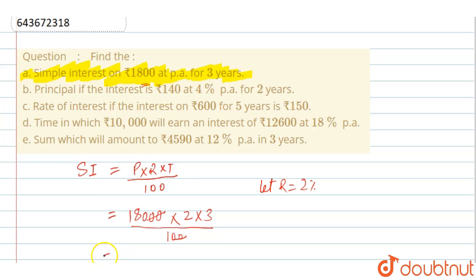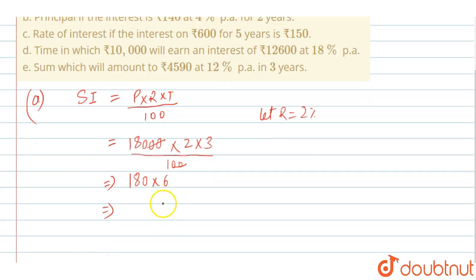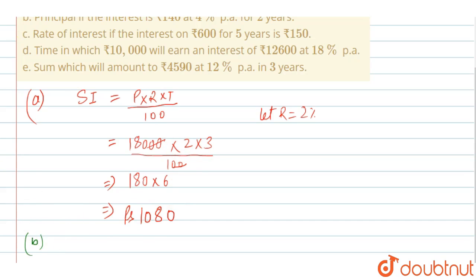So our final answer for sub-part A will be 180 into 3 equals 540, giving us ₹1080. So ₹1080 rupees is our simple interest for a principal of ₹18,000 at 2% per annum for 3 years.